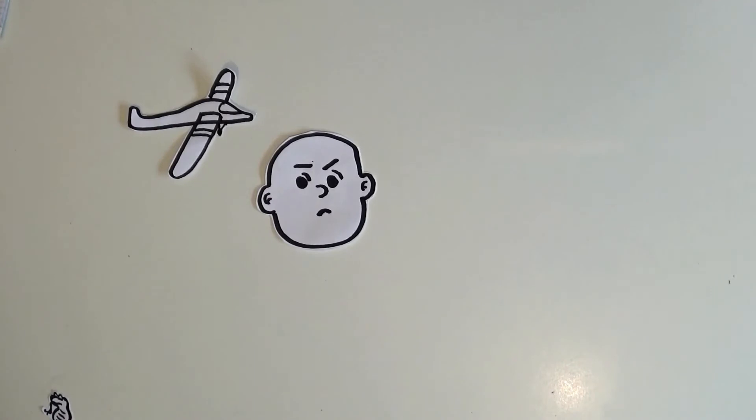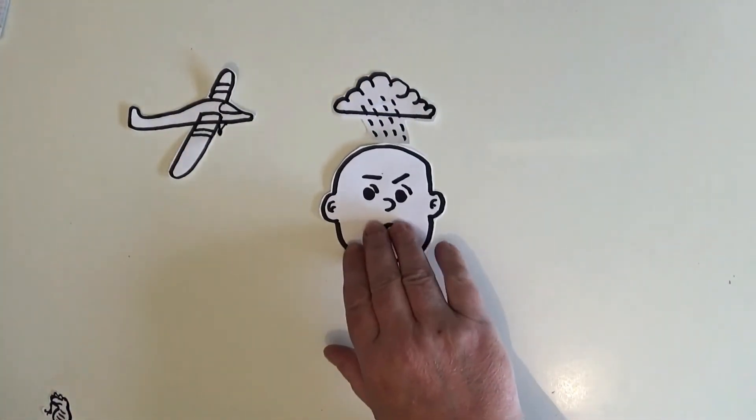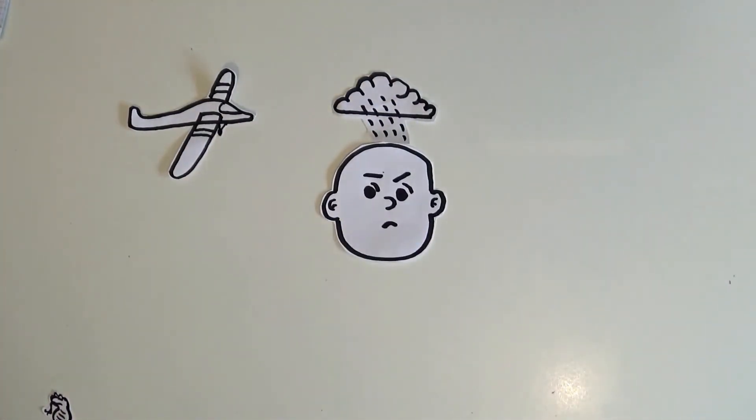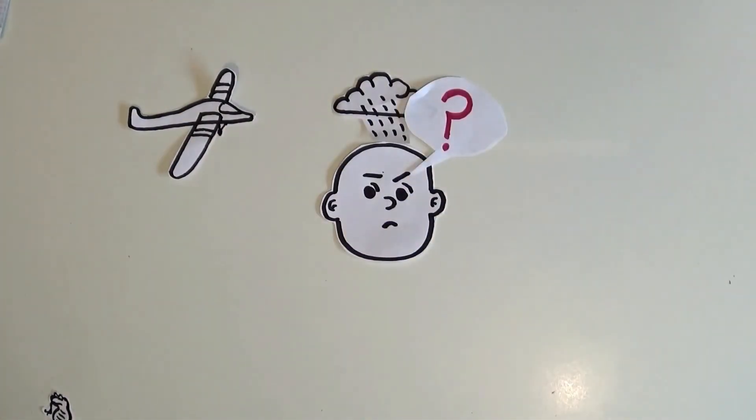And we also know from filling out our questionnaire that Seamus's terrible day would be if it was raining and he couldn't go outside. So we drew some rain to make it look like it was raining on Seamus and that was why he felt sad. And we also know from our questionnaire that the thing Seamus says all the time is what? So we drew a question mark in a speech bubble so that Seamus could say what?